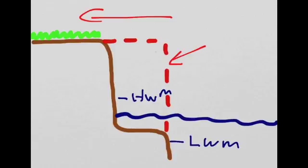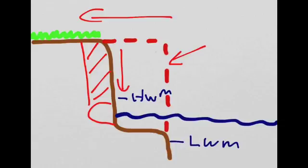The same process will be repeated. We will have a wave cut notch forming here. The cliff above the wave cut notch is unsupported. It will eventually slip into the sea and get transported away.